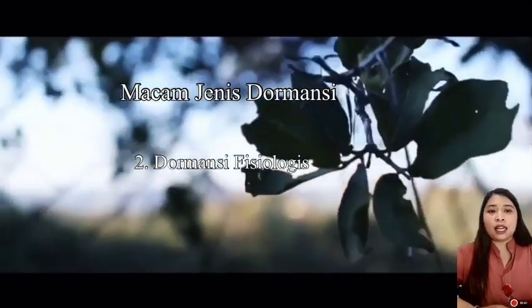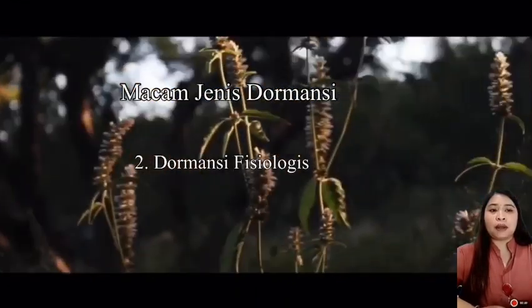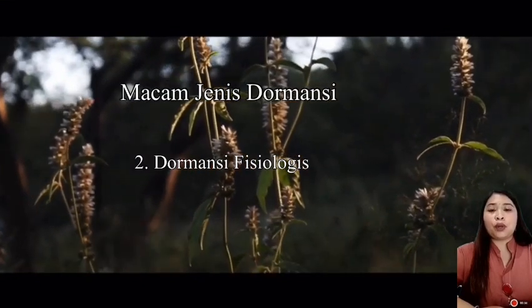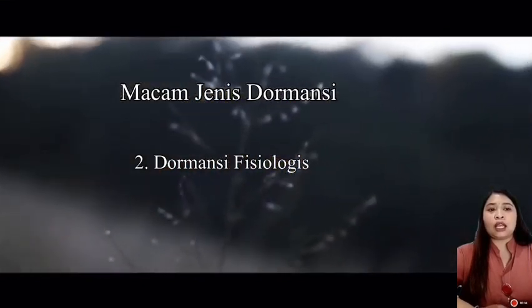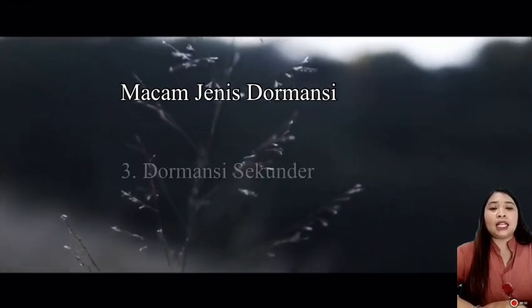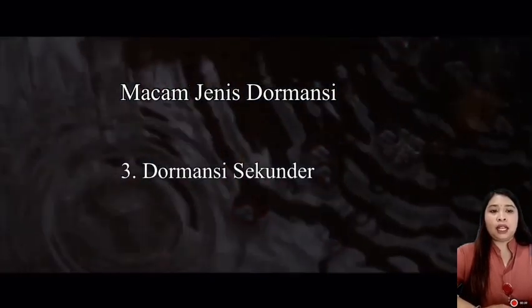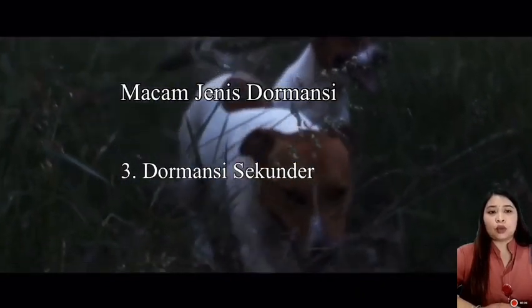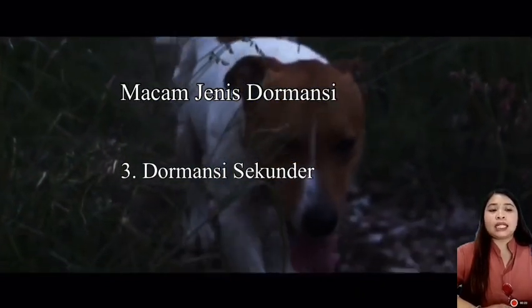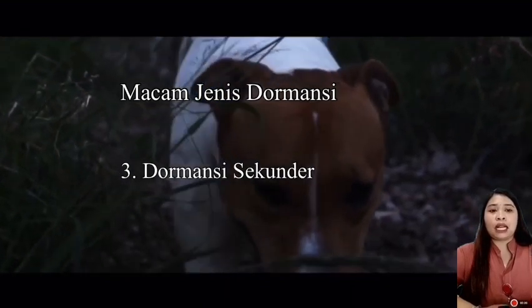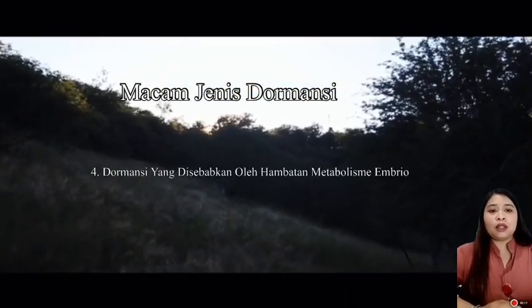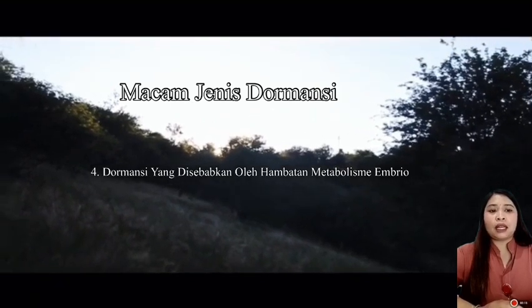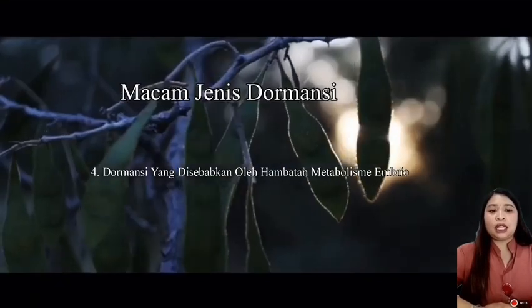After ripening sering didapat dari benih yang gagal berkecambah, walaupun embrio telah terbentuk sempurna dan kondisi lingkungan memungkinkan untuk berkecambah. Yang ketiga, dormansi sekunder: benih-benih yang pada keadaan normal mampu berkecambah, tetapi apabila dikenakan pada suatu keadaan lingkungan yang tidak menguntungkan selama beberapa waktu, dapat kehilangan kemampuan untuk berkecambah. Yang keempat, dormansi yang disebabkan oleh hambatan metabolisme pada embrio, contohnya keperluan akan cahaya.